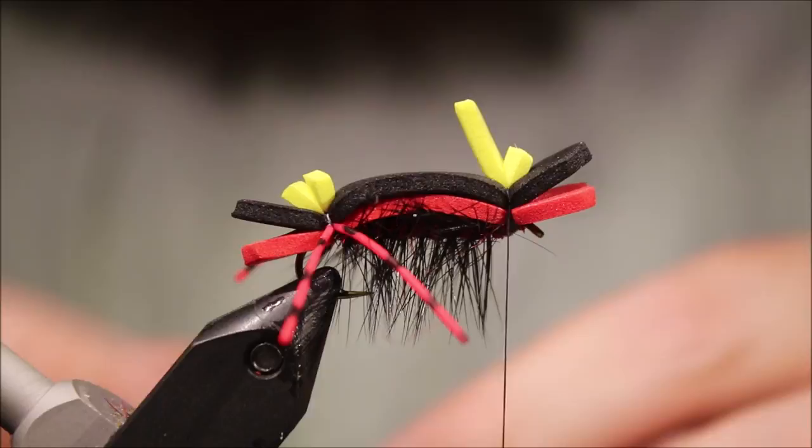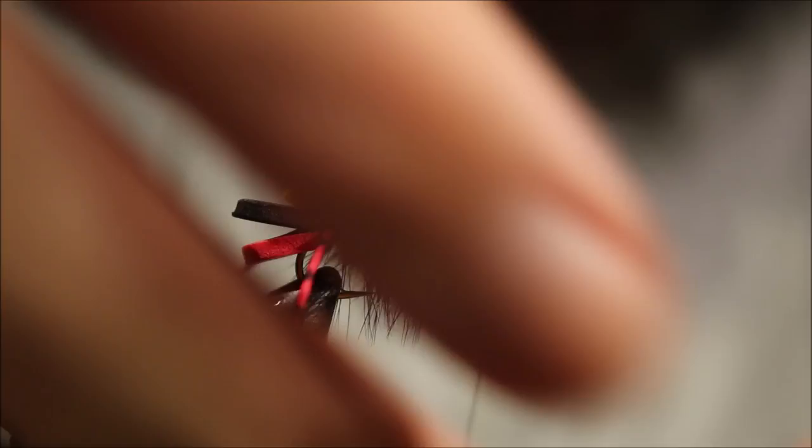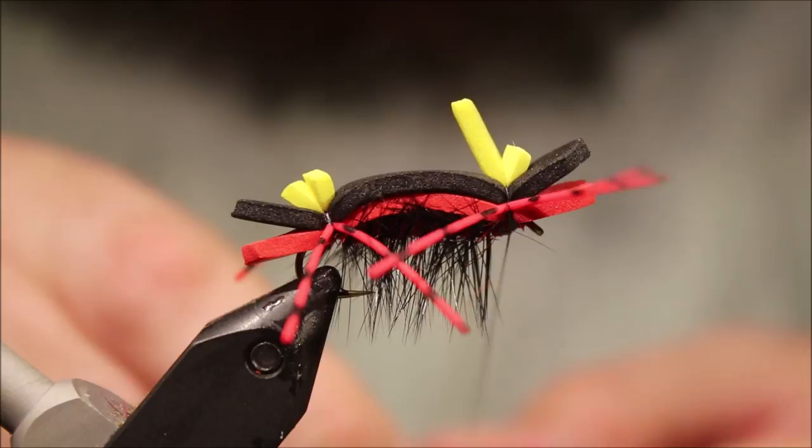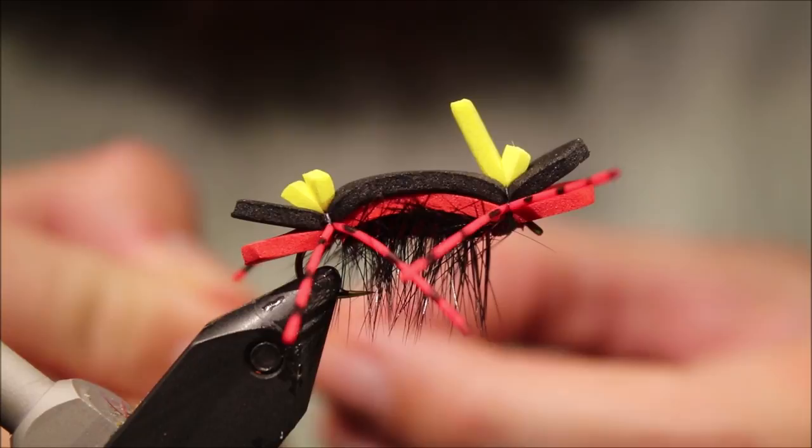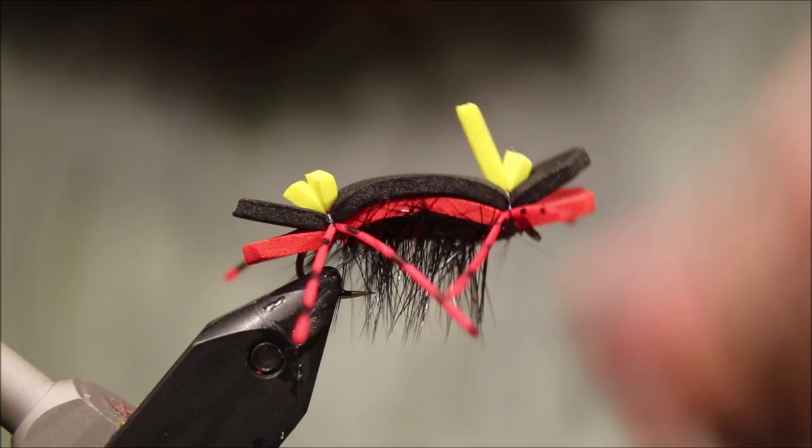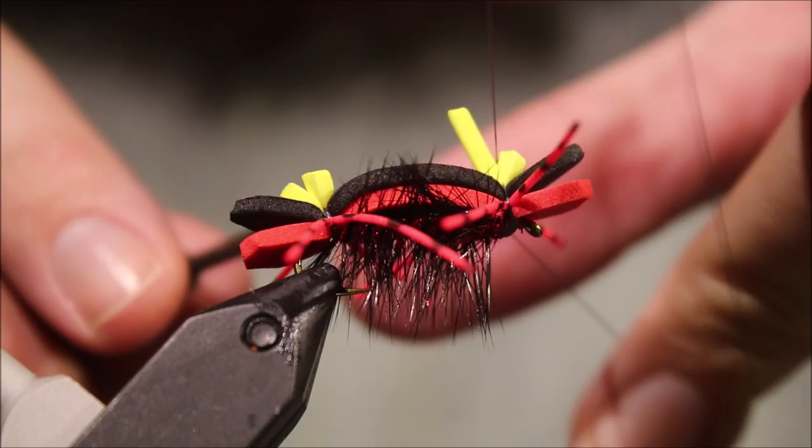And then front legs. Same again, if you just make sure they're right at the middle when you tie them in, you'll not even need to trim them. Then I'll come in on my side again. Catch them in one, two, three. That's fine. Whip finish.